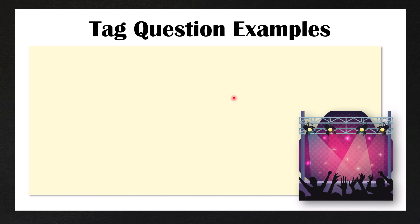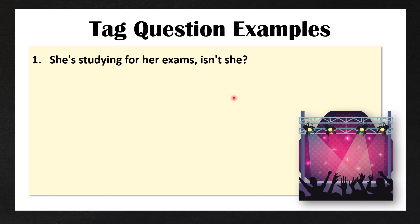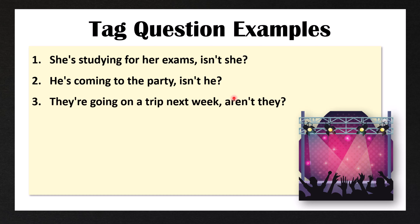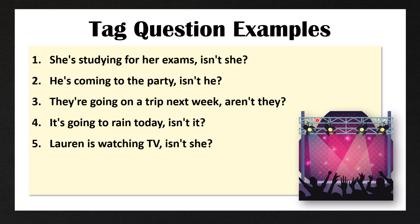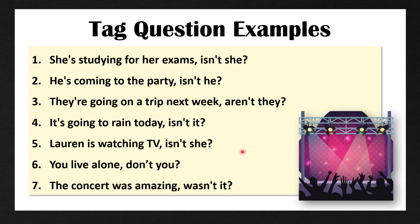Let's look at some more tag question examples. 'She's studying for her exams, isn't she?' 'He's coming to the party, isn't he?' 'They're going on a trip next week, aren't they?' 'It's going to rain today, isn't it?' 'Lauren is watching TV, isn't she?' 'You live alone, don't you?' 'The concert was amazing, wasn't it?'